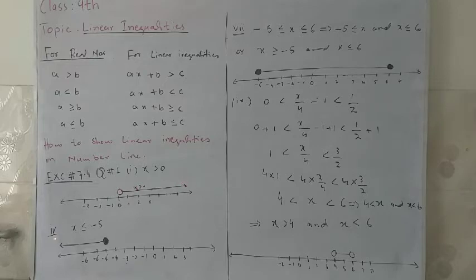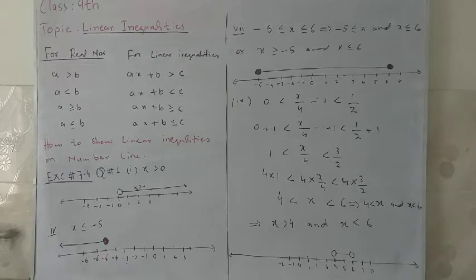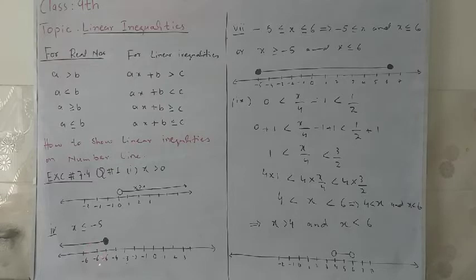Now, when we have another part where we have to show x is less than or equals to minus 5, here minus 5 is included. So we will use a solid circle for minus 5, which shows that minus 5 is included, and all real numbers which are less than or equals to minus 5 will be shown on the left side of the real line. This line shows all real numbers which are less than or equals to minus 5.